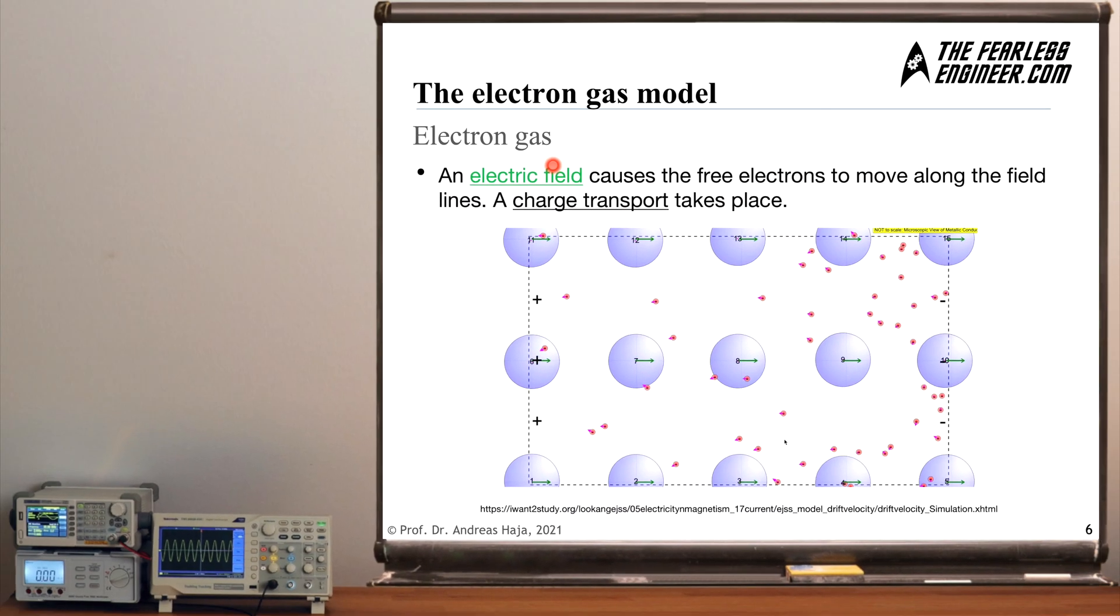And something very interesting happens as soon as we have an electric field which permeates, for example, this copper cable. Because this field then exerts a force on each individual atom and causes it to move along, to drift along against the direction of the field. And thus, this erratic gas cloud of particles moving wildly about then has a uniform direction. It moves from one end of the cable to the next. So we have a charge transport taking place, which is caused by an outer electric field. And this is exactly what the electron gas model is about.